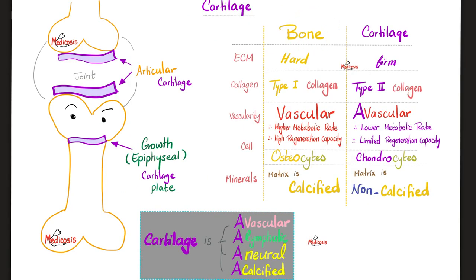We talked about the difference between bone and cartilage in the previous video. Cartilages are firm. They have mainly type 2 collagen. They are avascular — no vessels, no lymphatics, no nerves, no calcium.